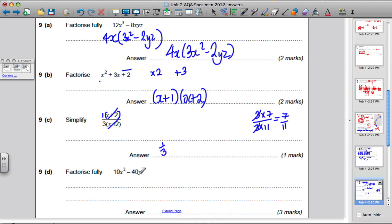OK, factorise fully 10x squared minus 40y squared. Well, what goes into 10 and 40? What's the highest common factor of 10 and 40? Well, 10 is, and you'd be left with in brackets, x squared minus 4y squared. Unfortunately, however, I'm not finished. The following expression in brackets is a difference of two squares, so it can be factorised.